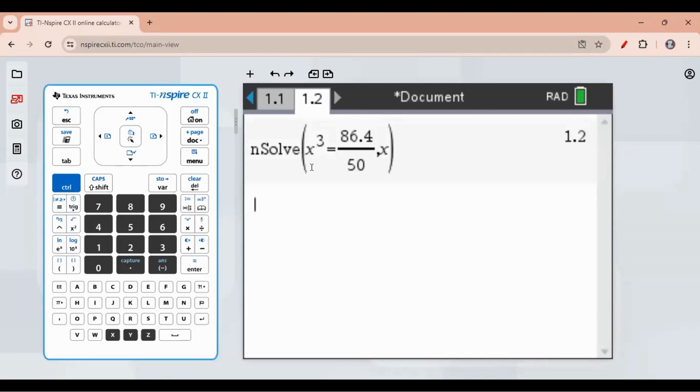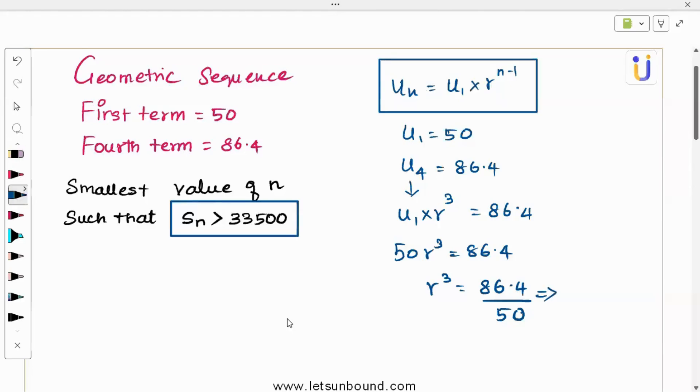You will get the answer 1.2. So here I made x, but actually in our problem, it's r. Getting back to the problem, I got my r value and it is 1.2. This implies r is 1.2.